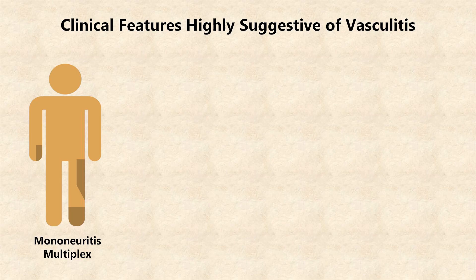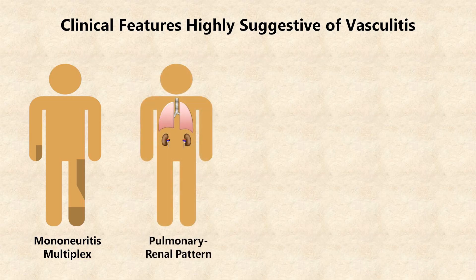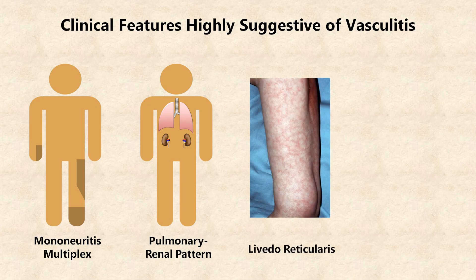Another feature that is highly suggestive of vasculitis occurs when an unknown multisystem disease has very prominent involvement of the lung and kidneys, especially the combination of pulmonary hemorrhage and either renal failure and or hematuria, as the only other non-vasculitis diagnosis that typically does this is anti-GBM antibody disease, also known as Goodpasture's disease. Livedo reticularis, which is a lace-like reddish discoloration of the skin, is frequently seen in medium and occasionally small vessel vasculitis. It's certainly not pathognomonic, however, as an idiopathic form seen in young women is the most common etiology of this finding.